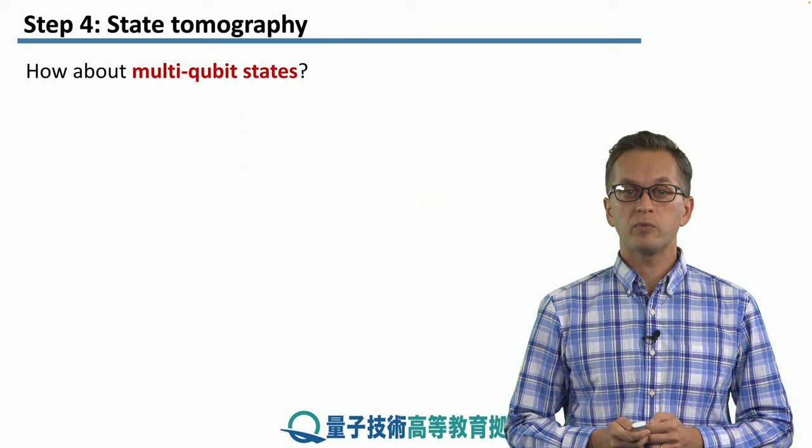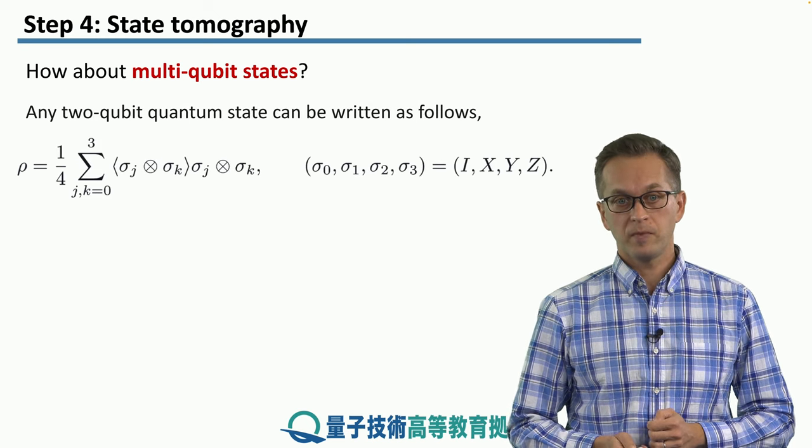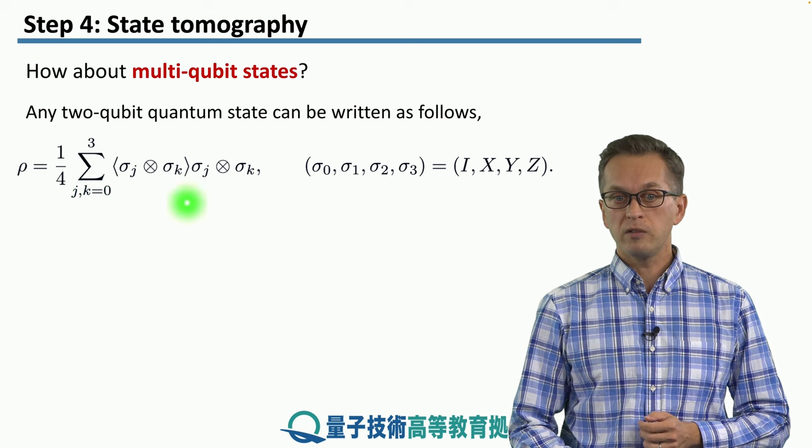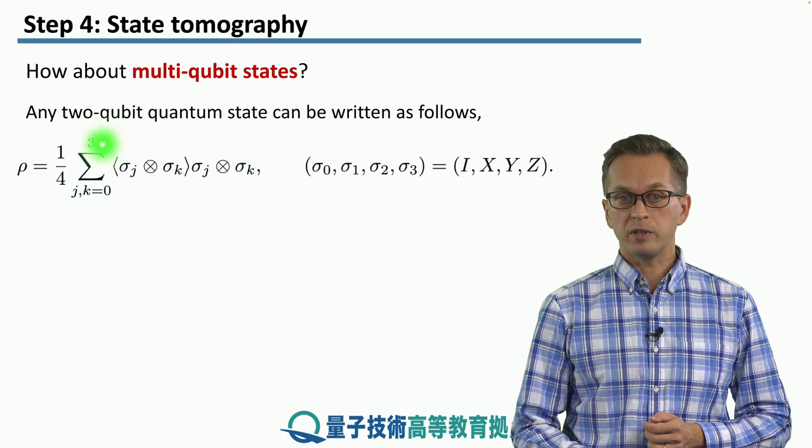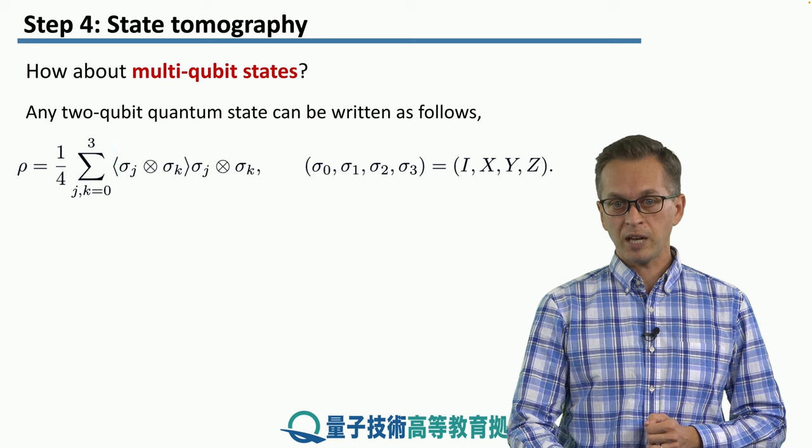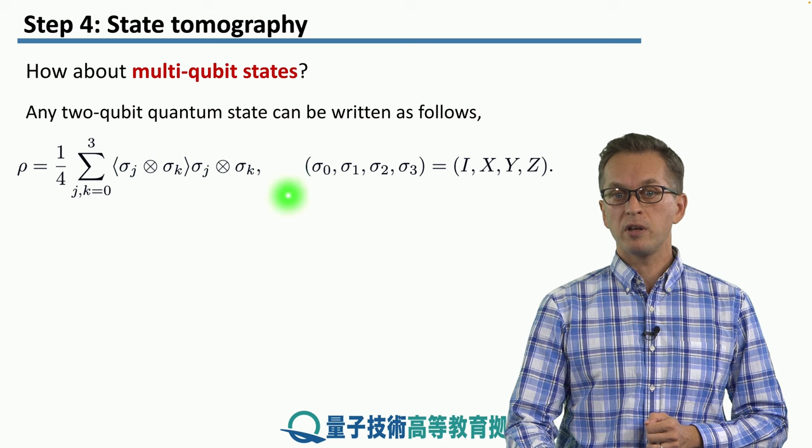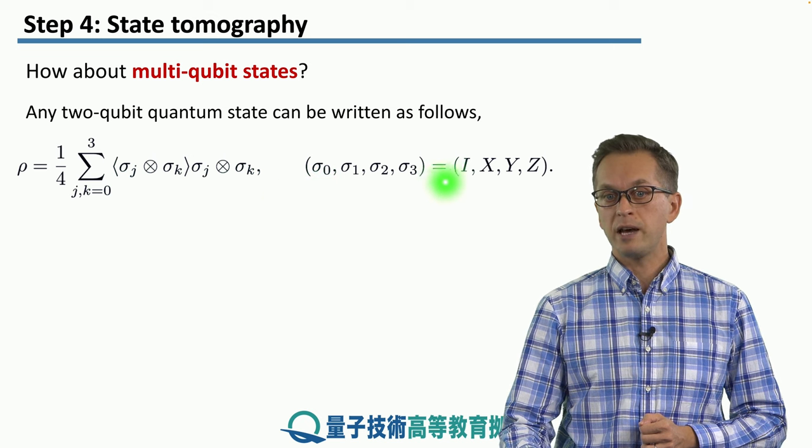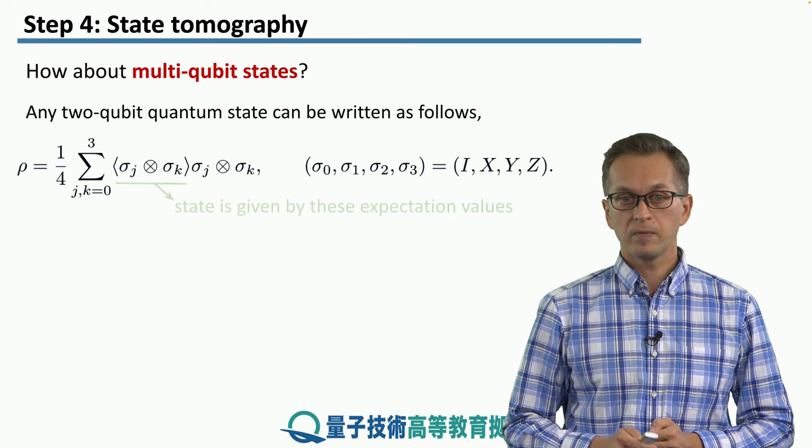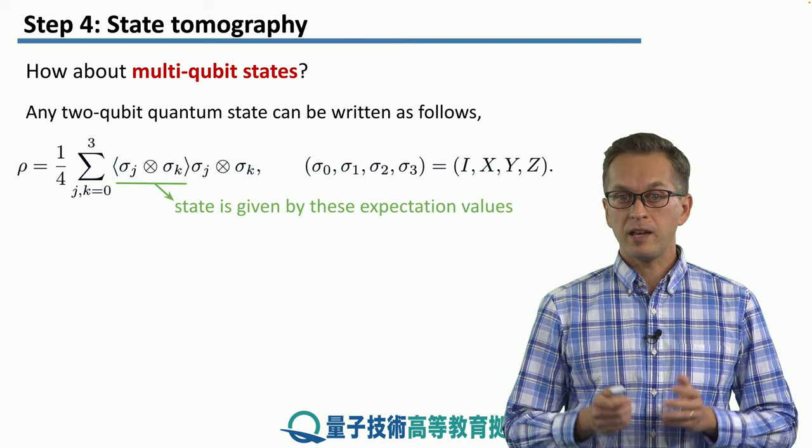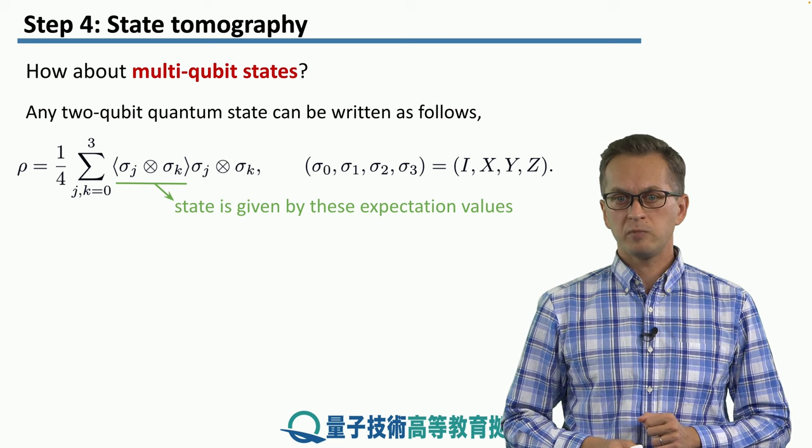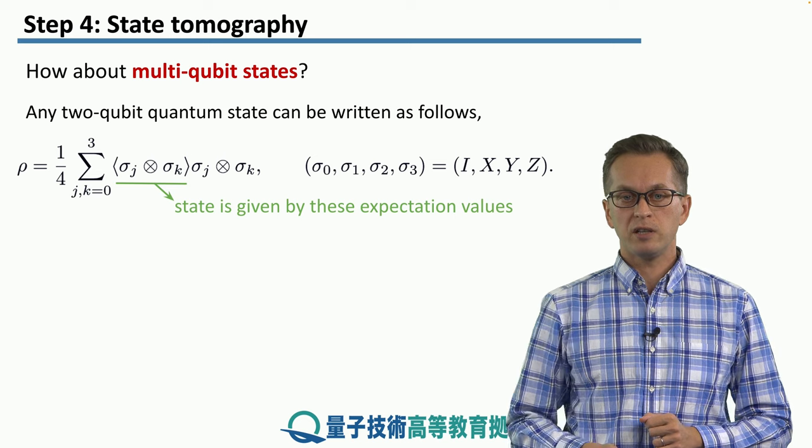Now, how do we perform state tomography on multi-qubit states? Well, again, we can express our multi-qubit state ρ in the following form, where we've got a product of some expectation value of Pauli operators, times the Pauli operators themselves. In this notation, we are including the identity operator, and we denote it by σ₀. So again, the game is about measuring these expectation values. So how many measurements do we actually need? How many terms in this sum are there?